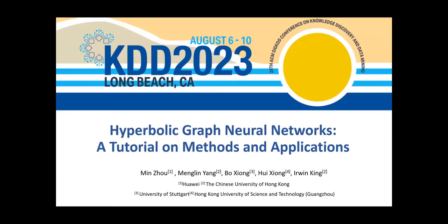We know that graph neural networks have gained significant attention due to their impressive performance in processing graph-structured data. However, the representational ability of Euclidean geometry is inherently limited, especially for data with non-Euclidean latent anatomy.